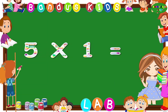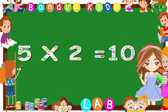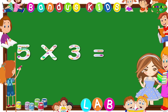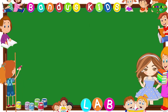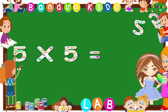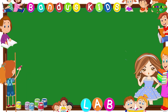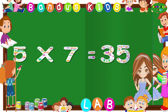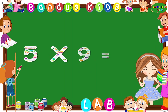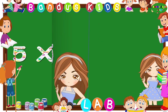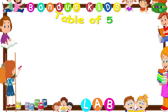Five ones are five. Five twos are ten. Five threes are fifteen. Five fours are twenty. Five fives are twenty-five. Five sixes are thirty. Five sevens are thirty-five. Five eights are forty. Five nines are forty-five. Five tens are fifty. Now let's revise the table of five one more time by singing.